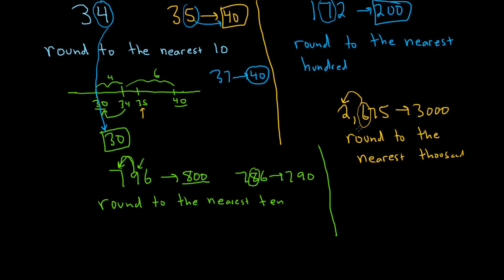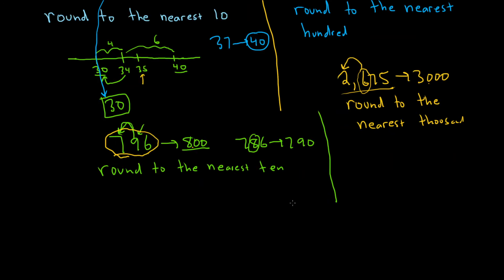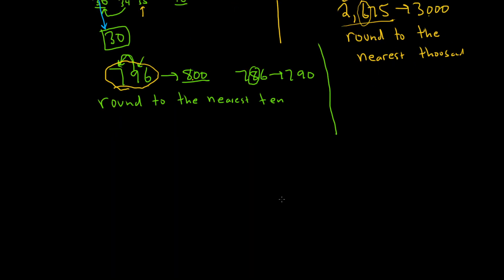And intuitively that makes sense, right? This number is closer to 3,000 than it is to 2,000. So that's the idea. Likewise here in this more confusing example, 796 is closer to 800 than it is to 790. So even if you got confused with what to do, if you think about what rounding means, you're going to the nearest number that has that place.